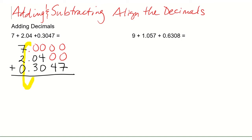You'll notice that all of these decimals are lined up and that tells us where we're going to position our numbers for adding. Now that we've got everything lined up, we're just going to add. Column by column: 0 plus 0 plus 7 is 7, 0 plus 0 plus 4 is 4, 0 plus 4 plus 0 is 4, 0 plus 0 plus 3 is 3. Bring down the decimal. 7 plus 2 is 9. So our final answer would be 9.3447.